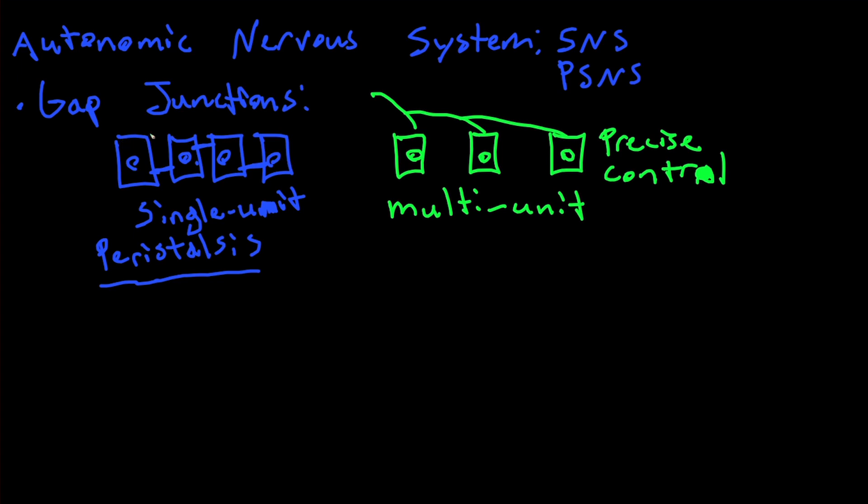This is good because you actually have more precise movement on each individual cell and better control over each cell's contractility. As opposed to single unit where it's like a domino set where you hit the first domino and all the rest go down, but you don't have control over the ones downstream. With multi-unit, you can have innervation of each single cell, so it's much more specific.